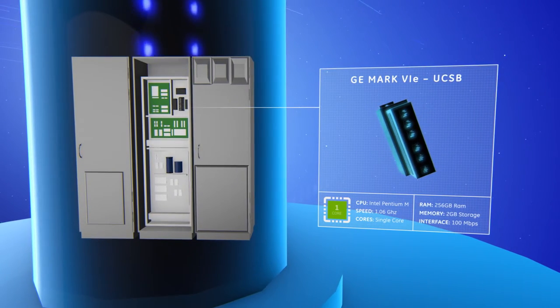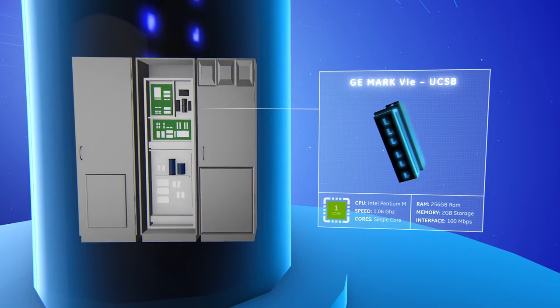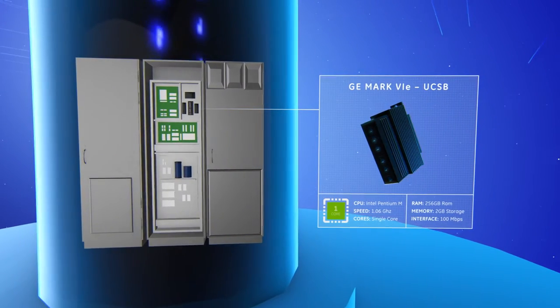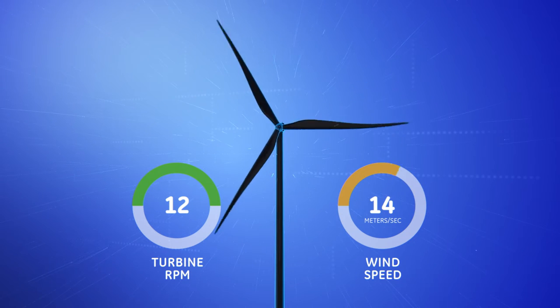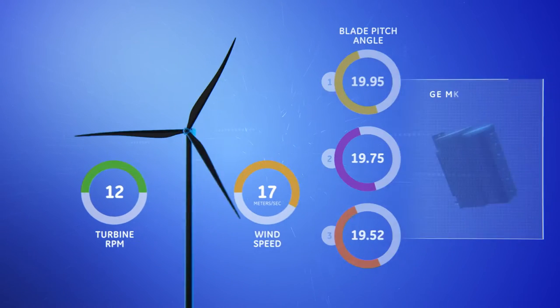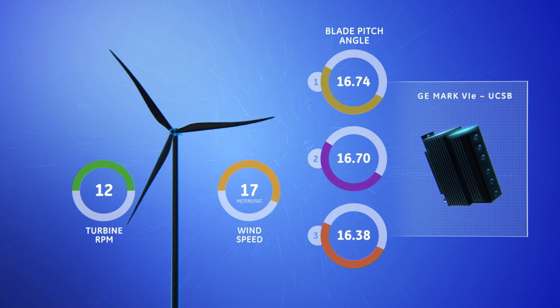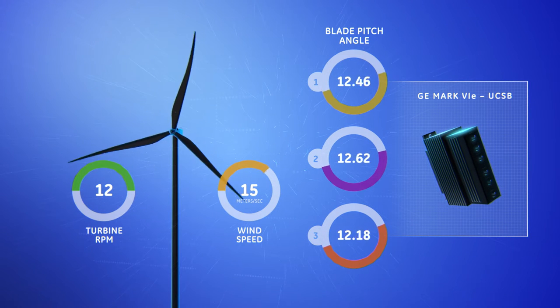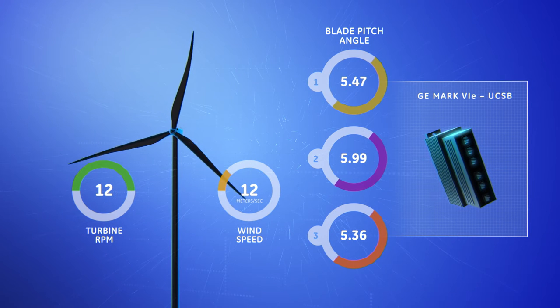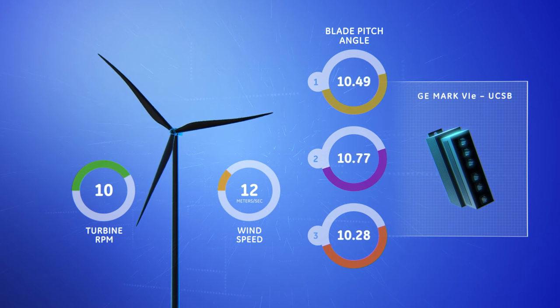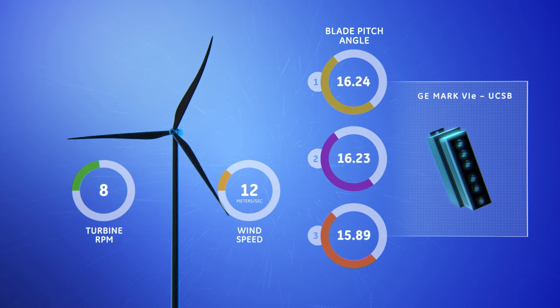One task of the controller, which could be GE's Mark 6E solution, is ensuring that the wind turbine rotates at a constant speed despite turbulent variations in the wind. To do that, the wind turbine controller uses the measured signals to compute the pitch angles of the blades. Increasing or decreasing the pitch angle causes the blades to capture more or less energy from the wind, so the rotor goes faster or slower.